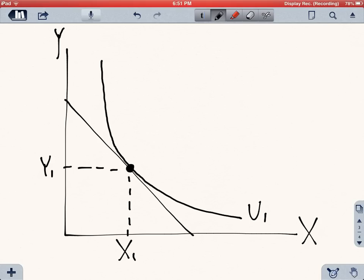If the price of x increases, the first thing we need to do is to draw a new budget line, which is closer to the origin along the horizontal axis, because now you have less money available to buy all x if you only bought x.